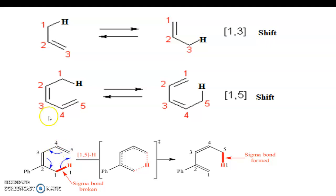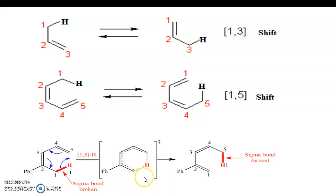This next example is essentially the same — there is just one substituent at this position, but the mechanism is the same. The hydrogen shifts to position five, this bond shifts here, this bond shifts here, so a 1,5 hydride shift takes place. The transition state is cyclic. In the transition state, bond forming and bond breaking are all represented by dashed lines. This is a cyclic transition state and it is concerted, because bond formation and bond breaking are taking place simultaneously, giving the final product.